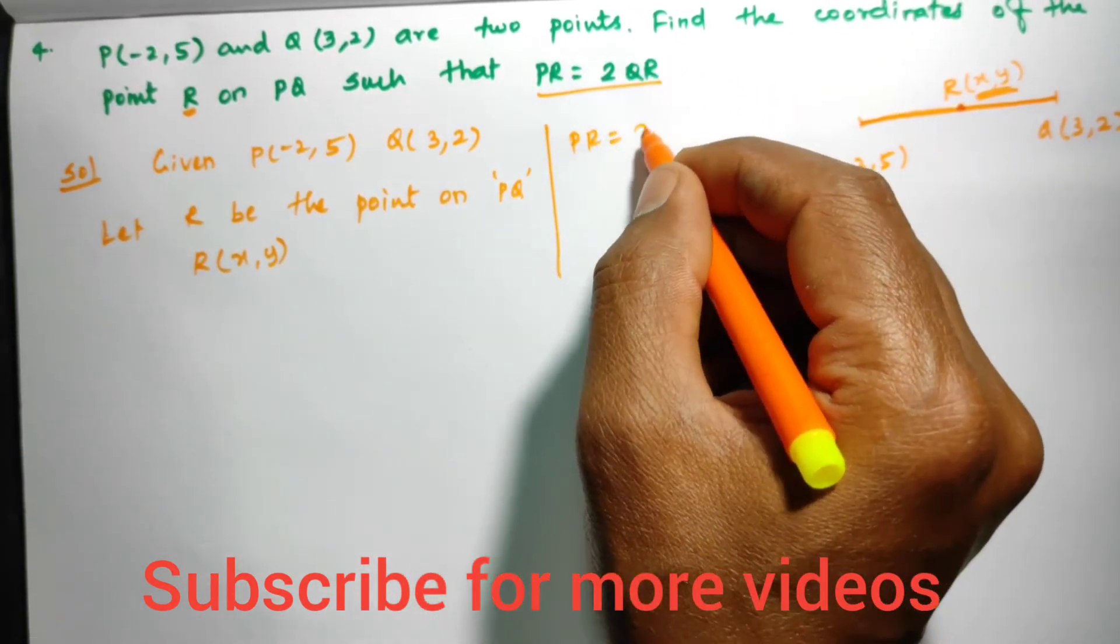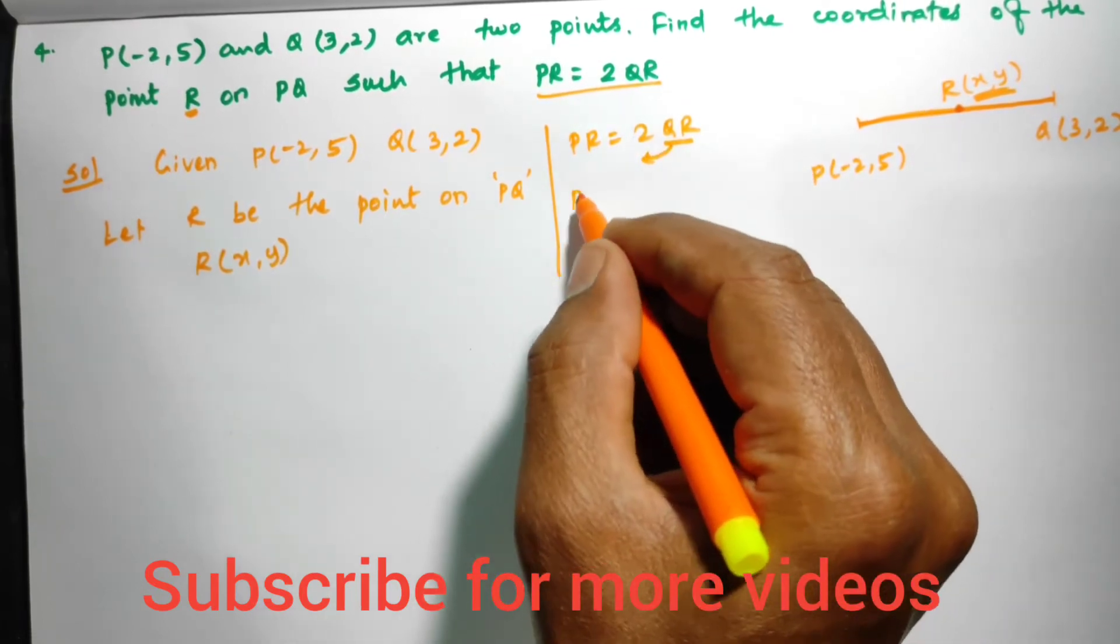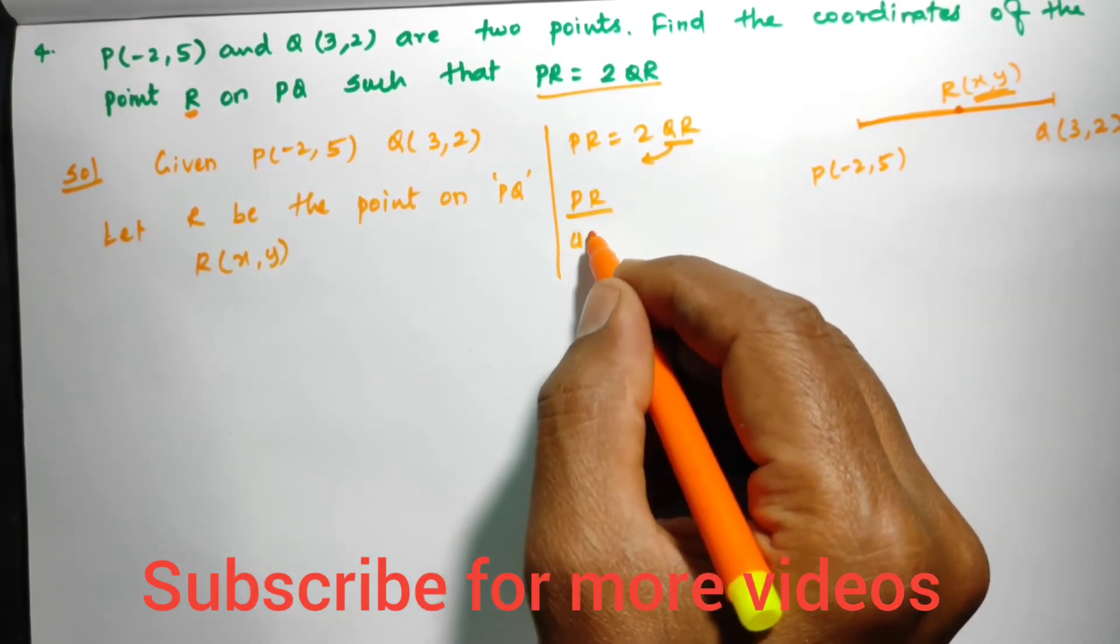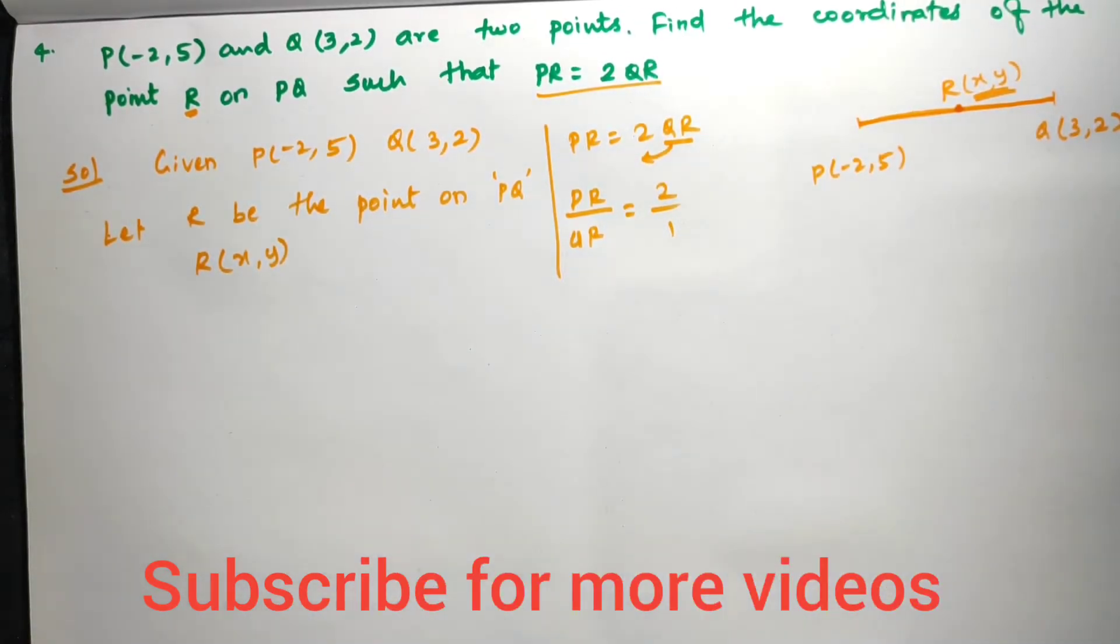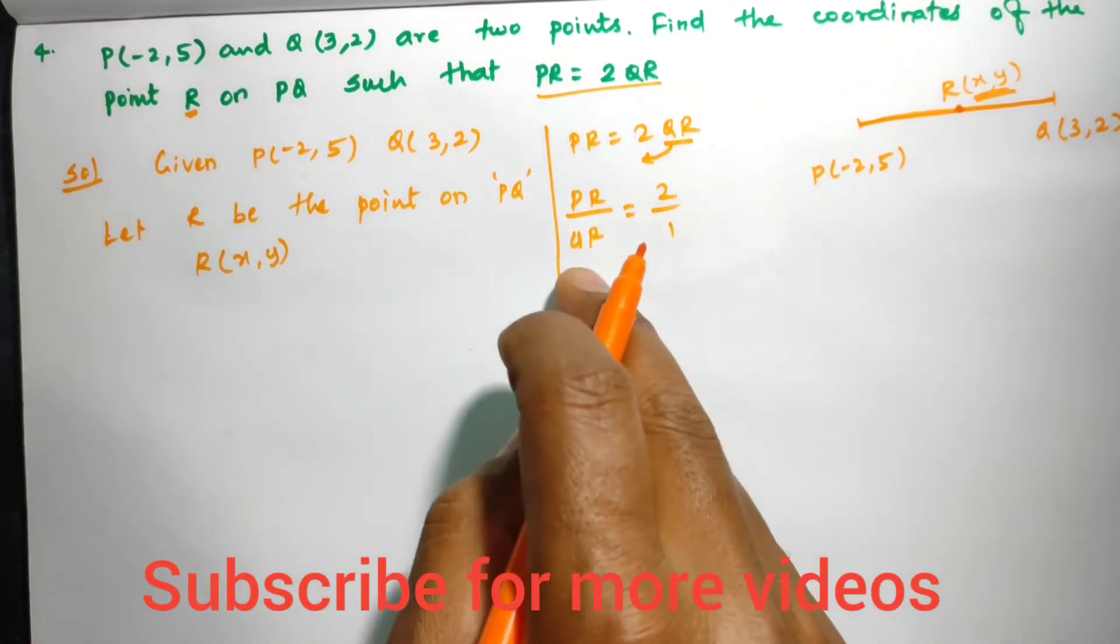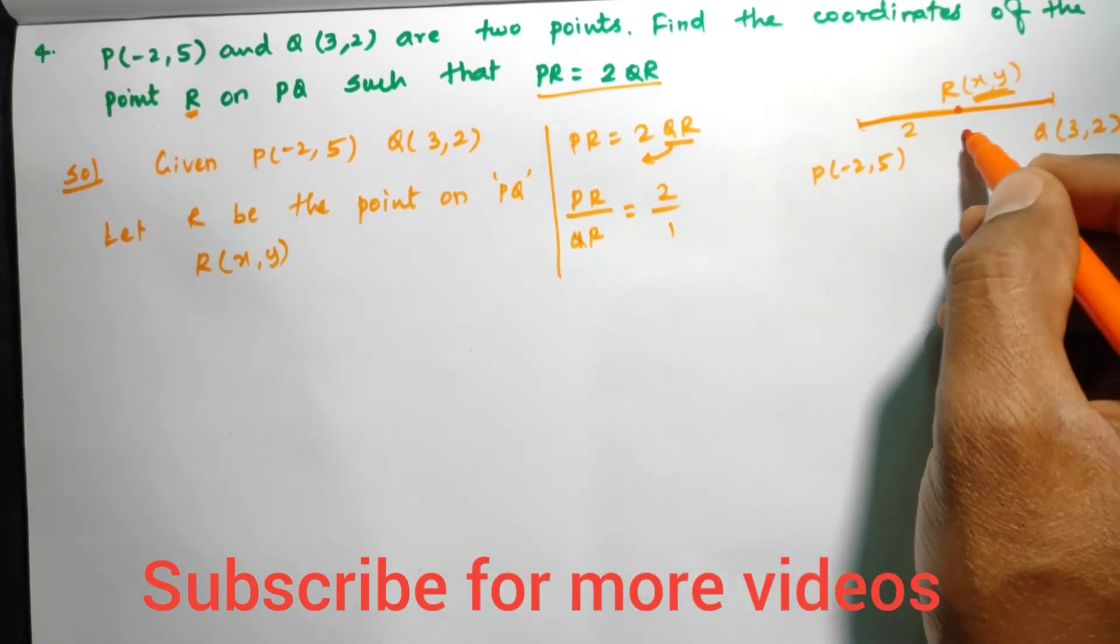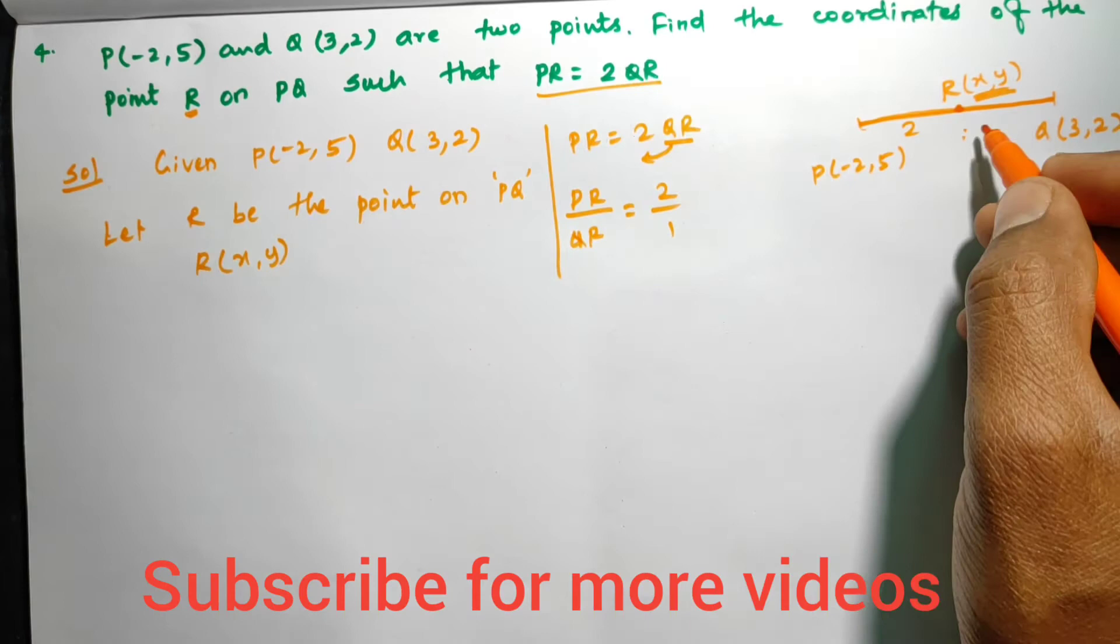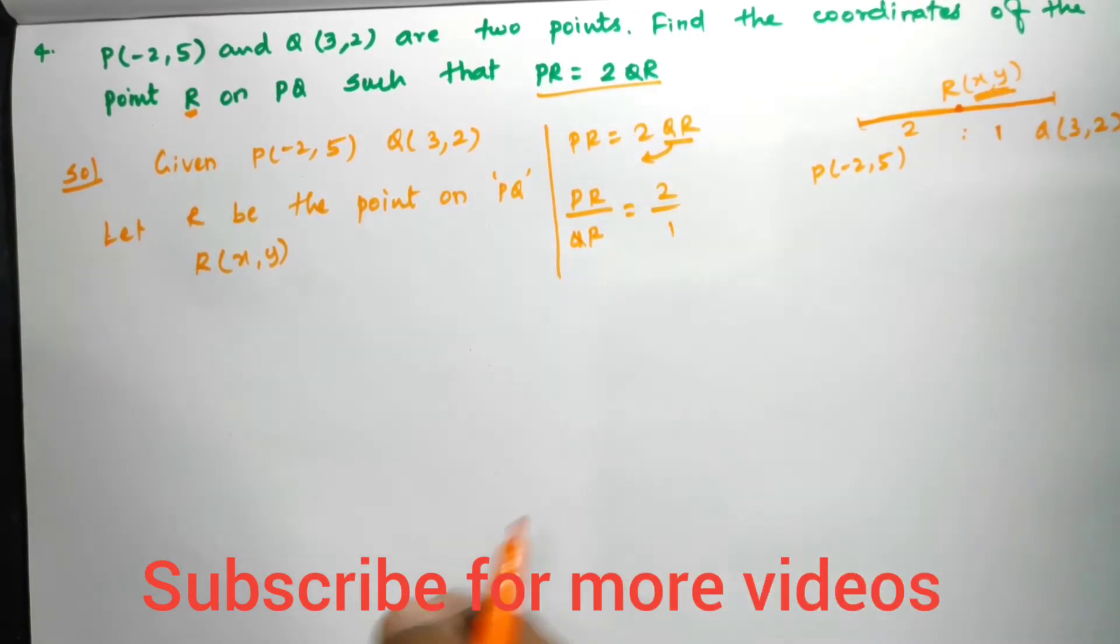PR equals 2 times QR. When we convert multiplication to division, we get PR/QR = 2/1. The denominator is 1 when nothing is mentioned. So P to R is 2 and Q to R distance is 1. This means the ratio is 2:1.